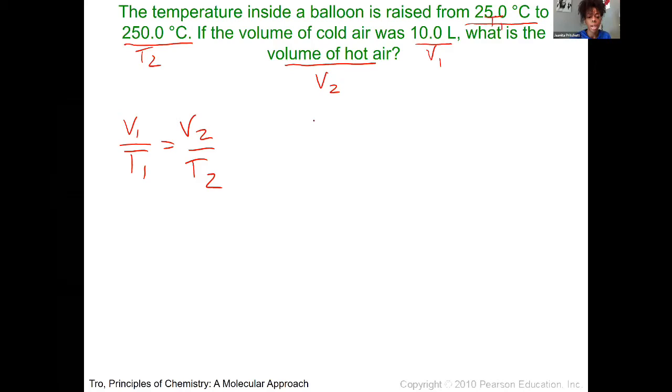So T1 would be 25 degrees Celsius plus our 273.15. We plug that into our calculator, 25 plus 273.15. And that gives us 298.15. With sig figs, that would end up being rounded off to 298.2.